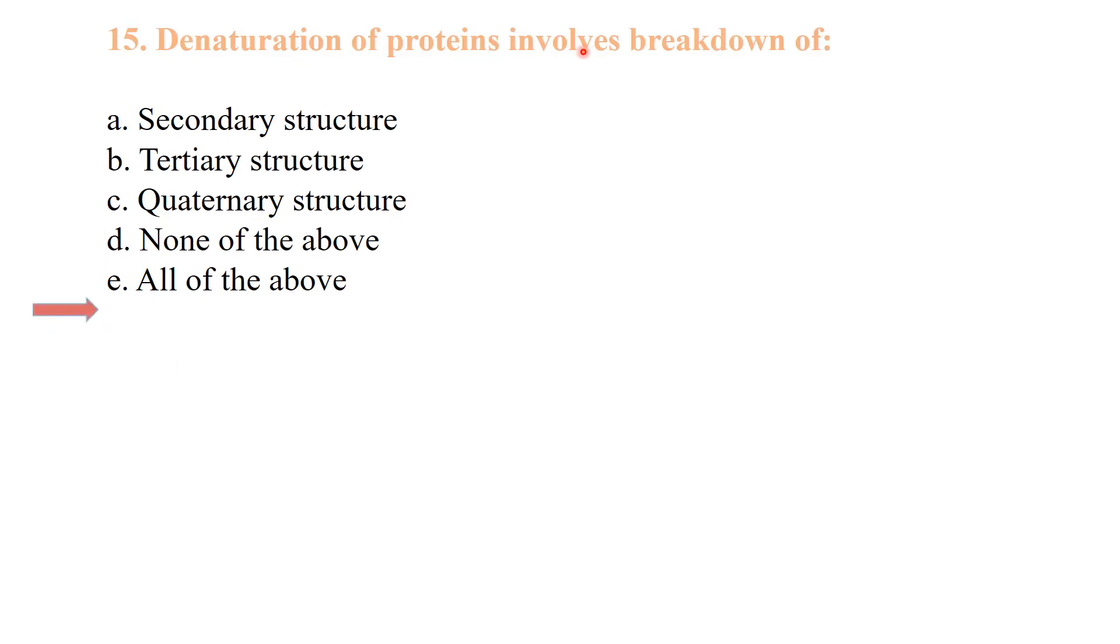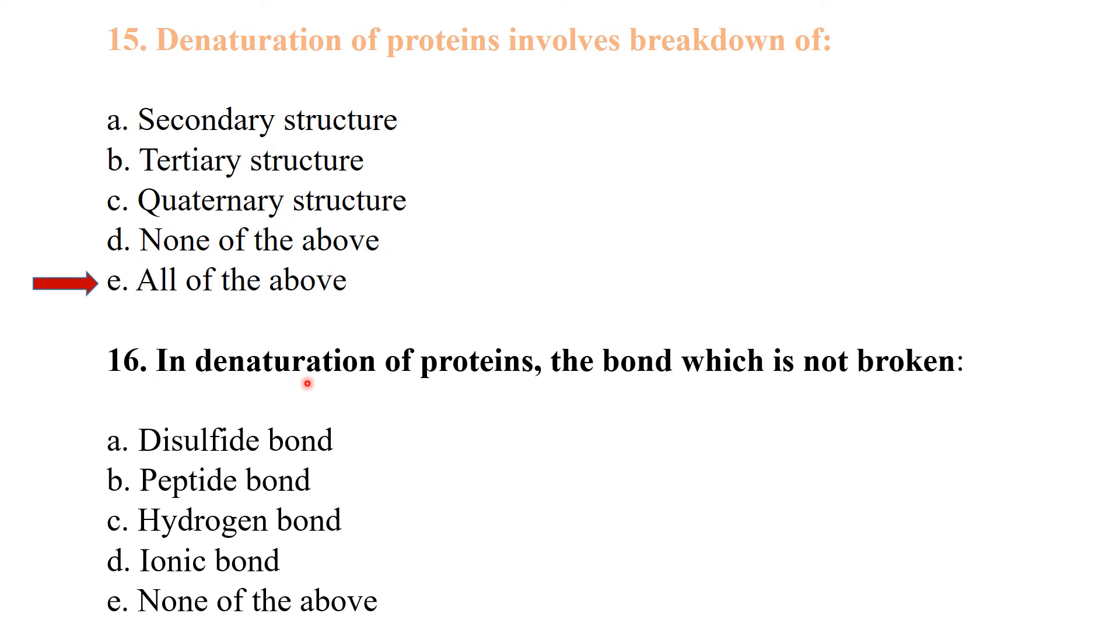Denaturation of proteins involves the breakdown of all structures - secondary structure, tertiary structure, and quaternary structure - except the primary. All of the above are involved in the breakdown during denaturation of protein. The bond which is not broken is the peptide bond.